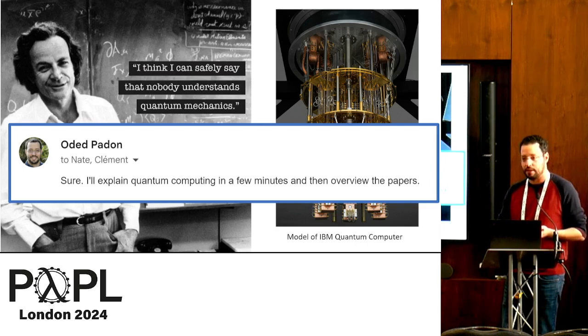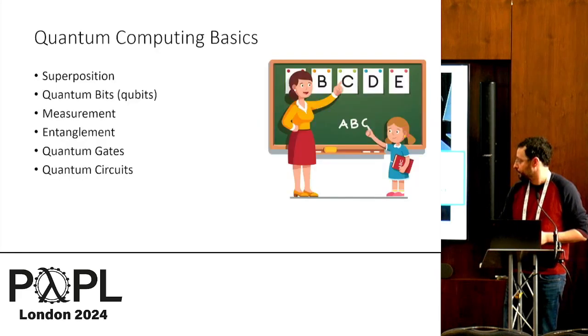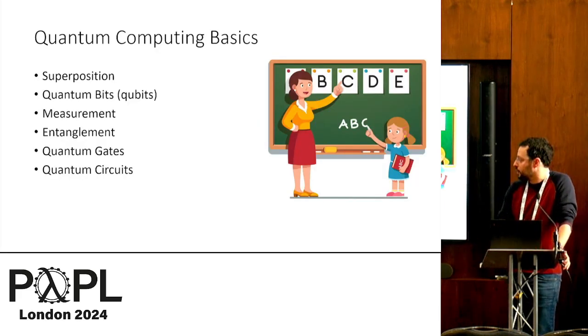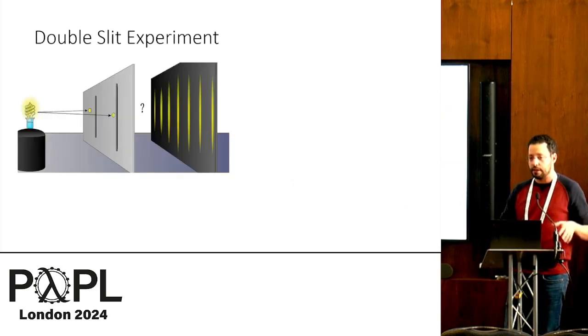And maybe what you'll get beyond what you could get from the abstract is what is the common theme of these papers, and how it fits with the general PL research tradition. So let's get started with some quantum computing basics. So the first thing that we need to understand to understand quantum computing is superposition.